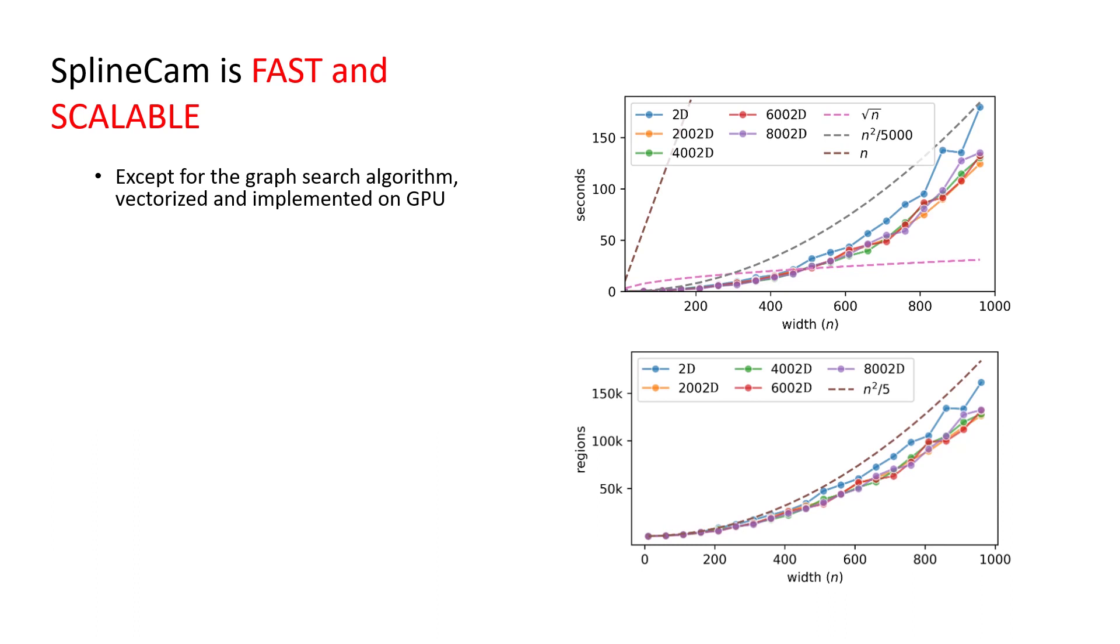We sweep the width of the network of a layer on the x-axis, which we denote by n, and we change the input space dimensionality between each plotted line. We see that for a layer with width 1000 and dimensionality 800D, SplineCam needs around 134 seconds to find 132,000 regions.